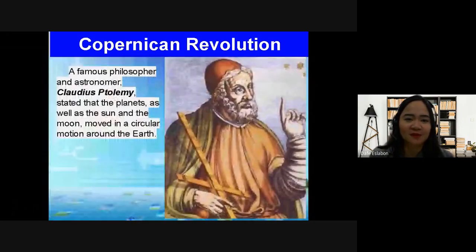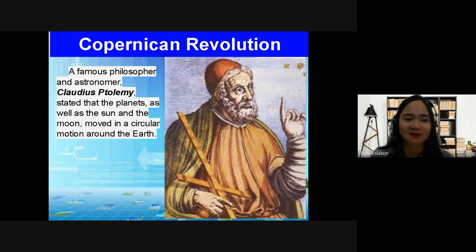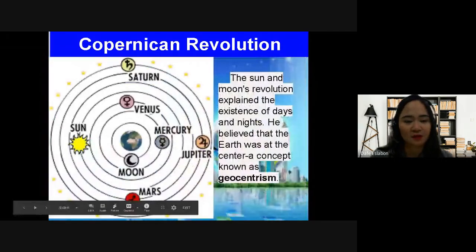A famous philosopher named Claudius Ptolemy stated that the planets, as well as the sun and the moon, moved in circular motion around the Earth. He was among the first scientists and astronomers to state that what causes day and night is the circular motion around the Earth.